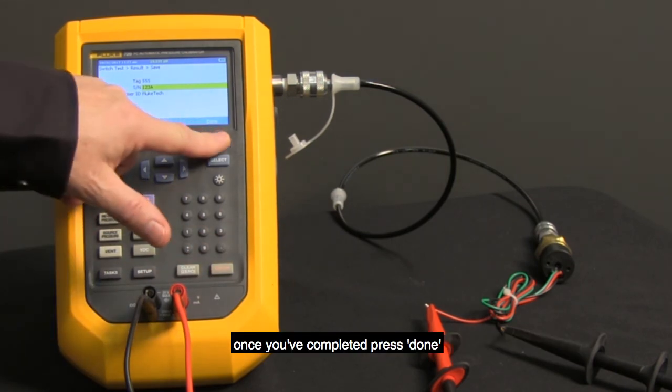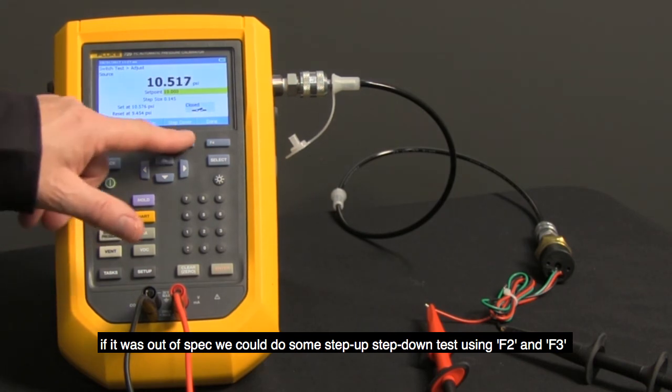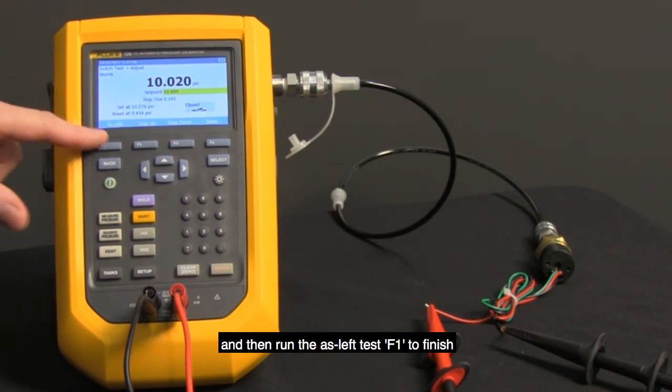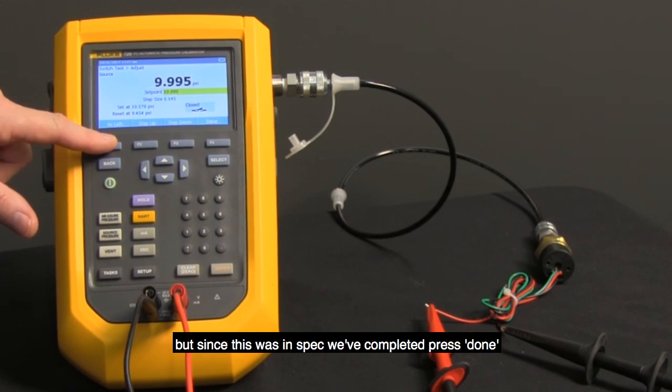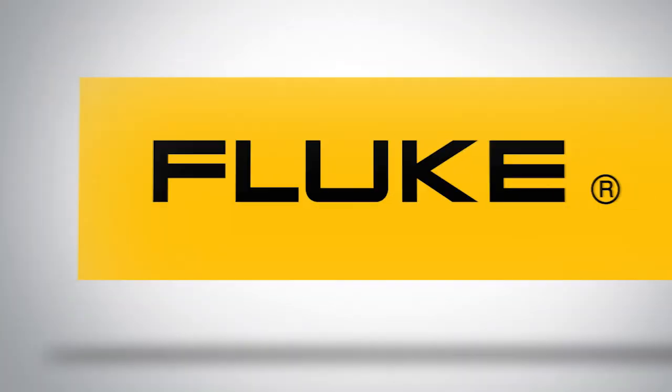Once you've completed, press Done. If it was out of spec, we could do some step-up, step-down tests using F2 and F3 to recheck once we've made adjustments to the switch, and then run the as-left test F1 to finish. But since this was in spec, we've completed, press Done, and we've completed our tests of a pressure switch calibration. Good job.